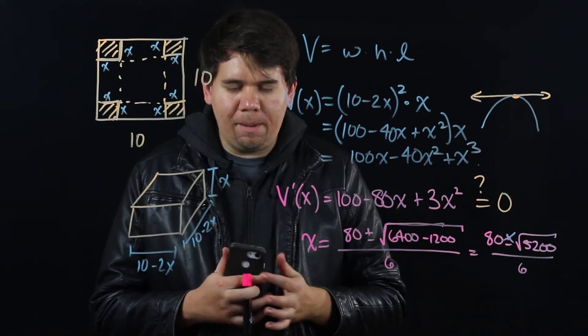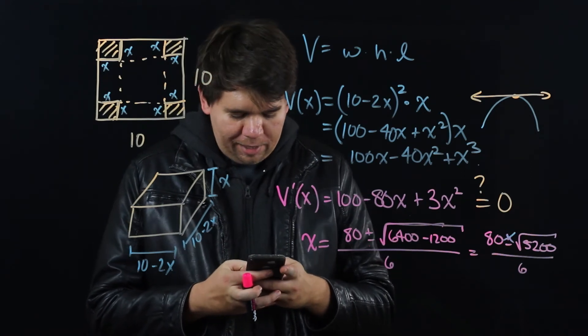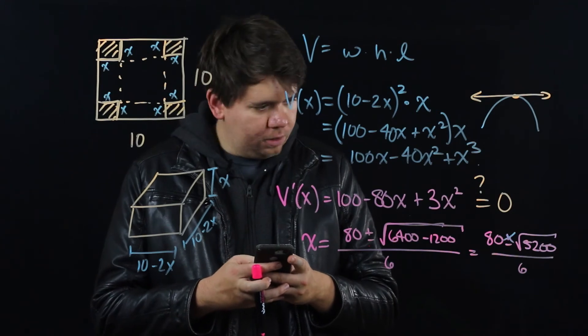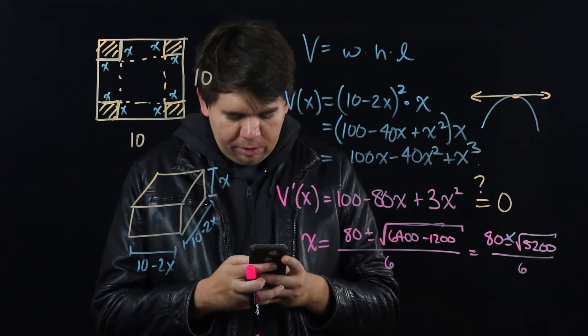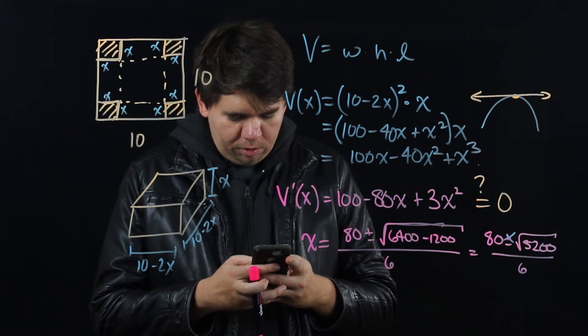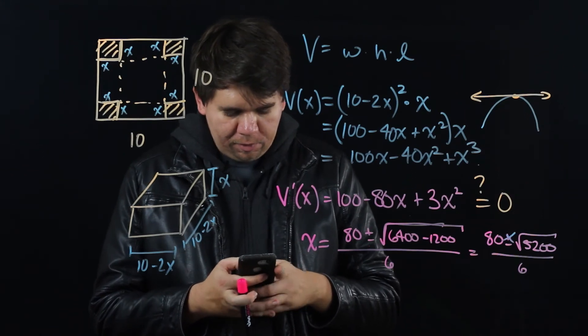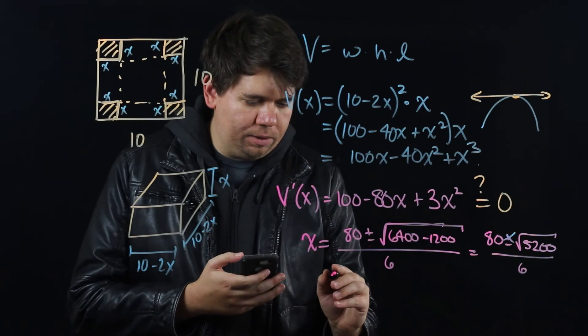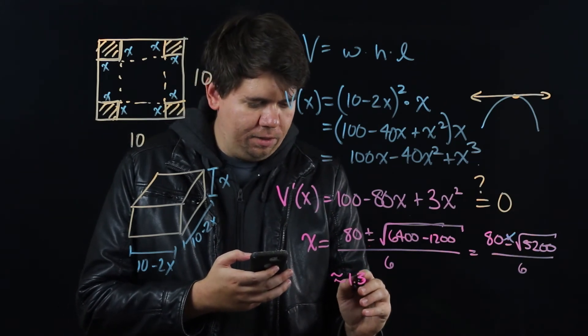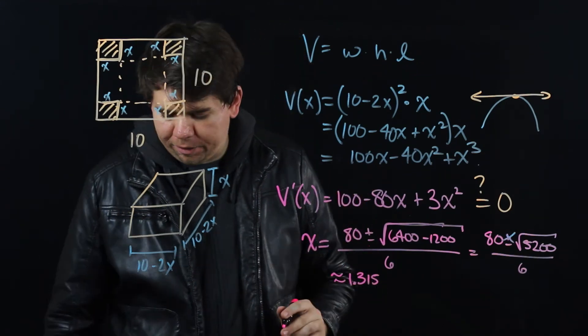What does that equal? I don't know. Let me get an approximation by typing it into my calculator. I have 80 minus the square root of 5200 all over 6. That comes out to be about 1.315, something around there.